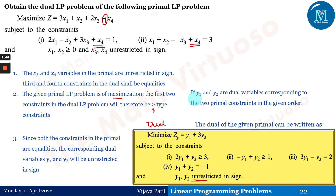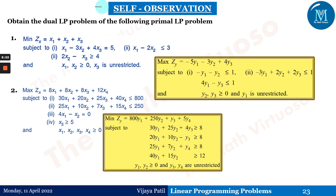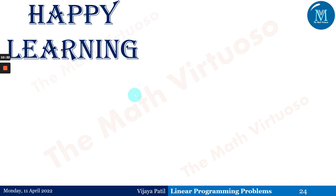This is a self-observation slide where two practice questions are given to write the dual from the primal, covering combinations like equality constraints, minimization, and unrestricted variables such as x3. You can verify these using the rules discussed. That brings us to the end of this session — please stay connected. Thank you so much, happy learning.